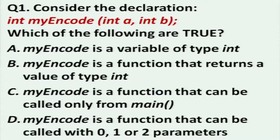So that's the first question. Consider the declaration: int myencode(int a, int b). Which of the following are true? Myencode is a variable of type int. Myencode is a function that returns a value of type int. Myencode is a function that can be called only from main. Myencode is a function that can be called with 0, 1 or 2 parameters. More than one answer may be correct. You get exactly one minute to answer. Please indicate your choices.